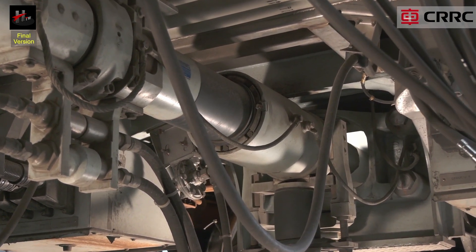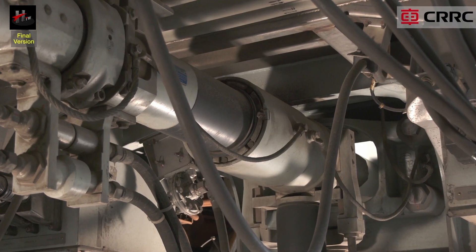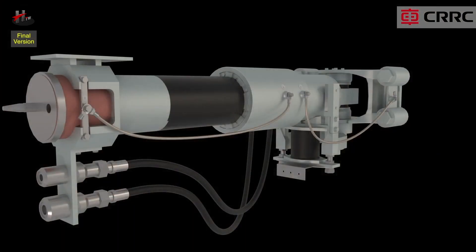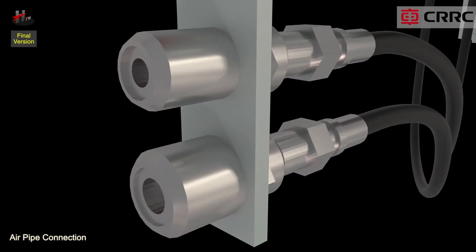The important parts of the semi-permanent coupler with buffer are the air pipe connection mounted parallel to the coupler shank. The single air pipe connection consists of a pipe with a gasket.